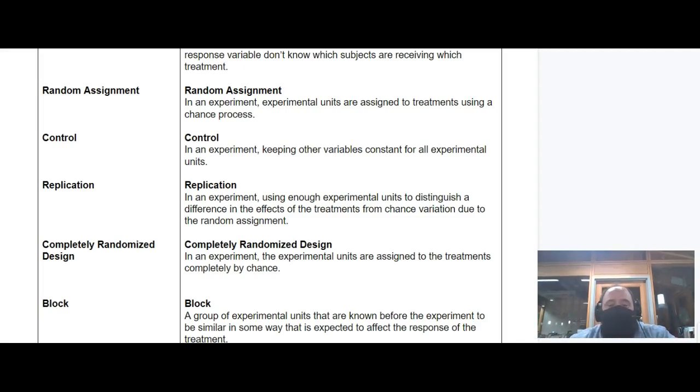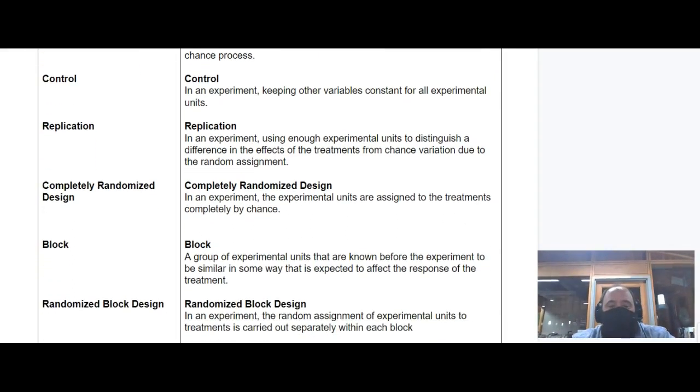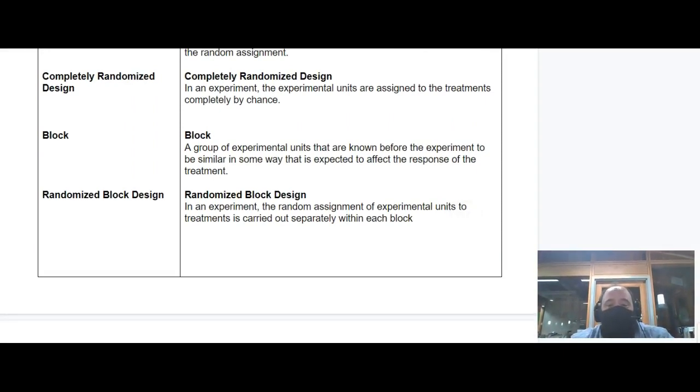There are different ways to achieve randomization. One is completely randomized design - take the whole group and split them up randomly. You can do blocks of groups, like blocks by age: littles, adolescents, young adults, midlife aged. Within those blocks you randomize to see if the treatment has a different effect by different age groups, racial groups, or genders. That's a randomized block design.